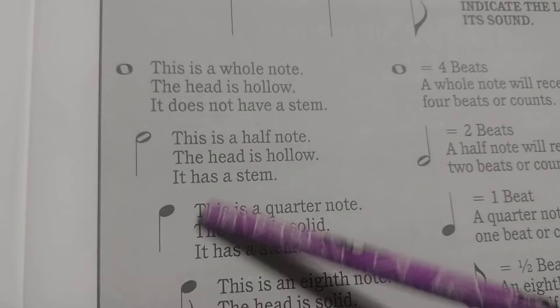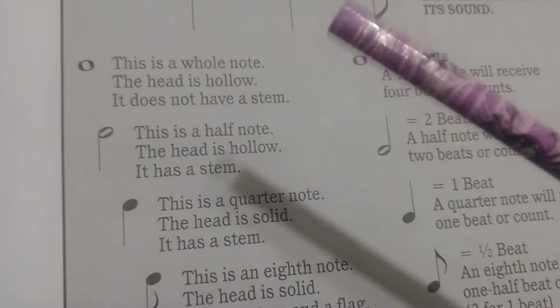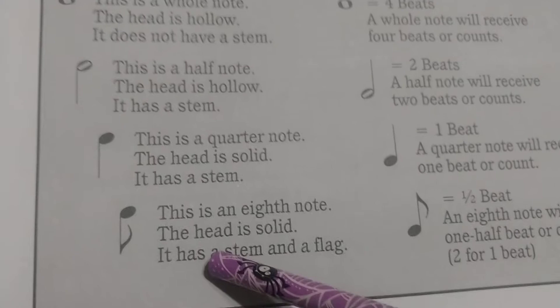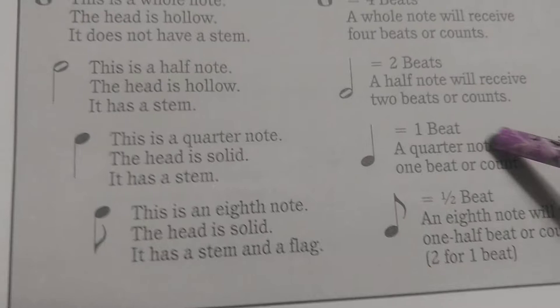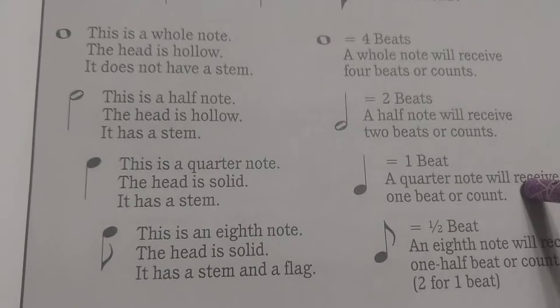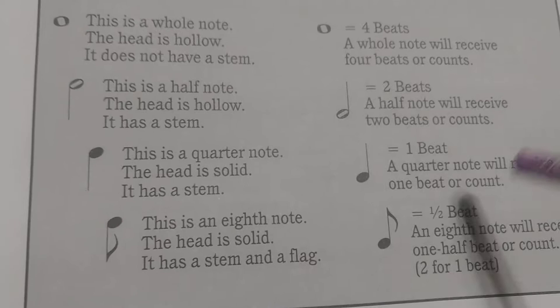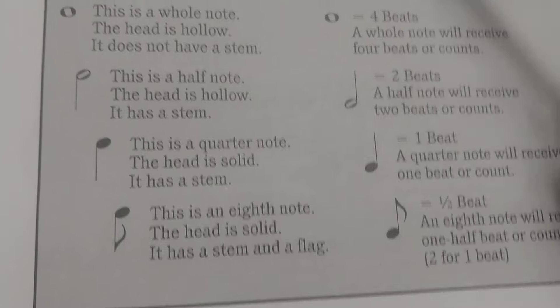We're going to have a quarter note, which is going to be worth one beat of time. A quarter note will be colored in and will have a stem. Our eighth note is going to be a little bit confusing for right now, so we'll touch base on it after we get through a few more pages. The eighth note is going to be worth half a beat of time, so they will be very fast — twice as fast as our quarter note. The first few strings we use actually don't even use the eighth note, so I do come back to that later on.